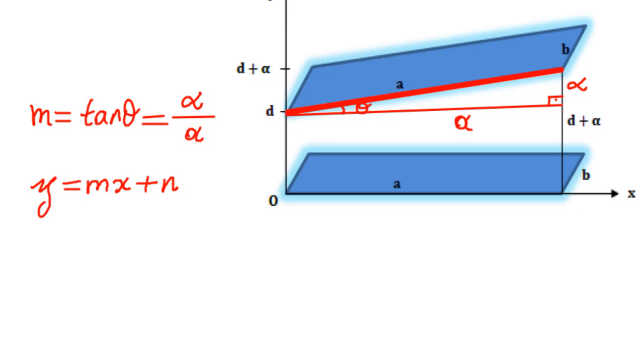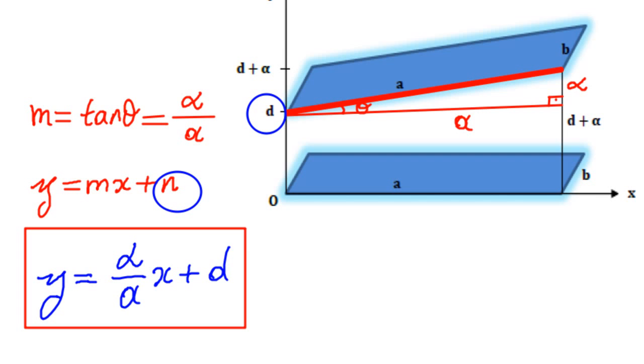According to the general formula for the line equation, y equals m times x plus n, where n is the y-intercept of this line, which is d. And since m is alpha over a, we have the line equation as y equals alpha over a times x plus d.